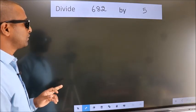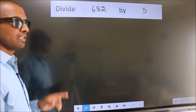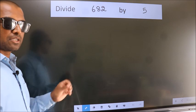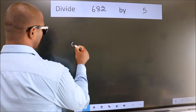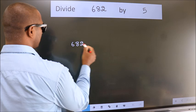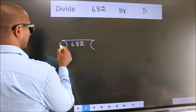Divide 682 by 5. To do this division, we should frame it in this way: 682 here, 5 here.